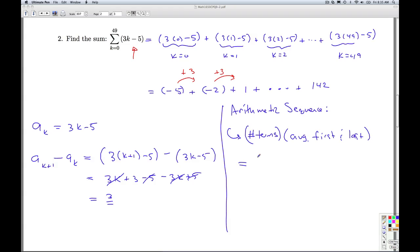So the number of terms, how many terms? Well, you may be tempted to think there's 49 terms. 49 minus 0 is 49. But you're missing the 0 term. So there's actually 50 terms here. You always take the upper limit minus the lower limit and add 1. So we're actually adding 50 terms. And I'm taking the average of the first and last term. So the first term was negative 5. The last term is 142 divided by 2.